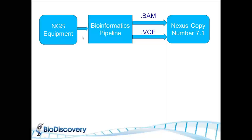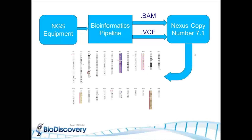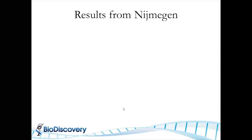A pipeline would be something like this: you get your NGS data, go through your bioinformatics pipeline, generate BAM and VCF files, and go into Nexus. Red indicates copy number loss, blue indicates copy number gain and amplification, yellow indicates regions of LOH, and the little points are sequence variants like deletions and SNPs — point mutations. So you can get a complete integrated view of that sample.